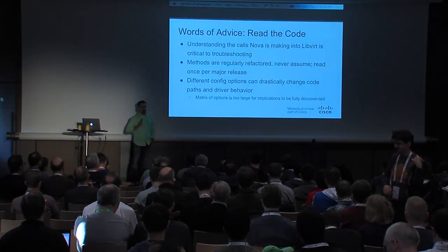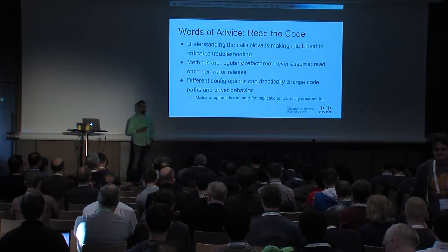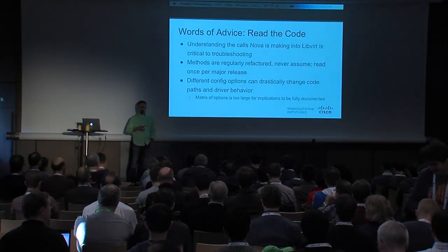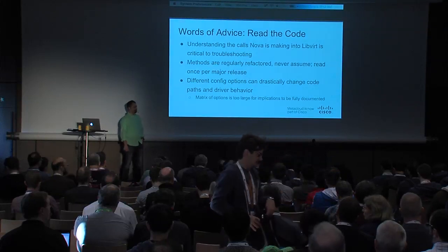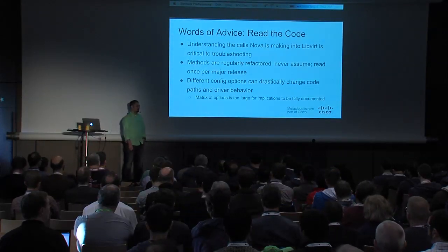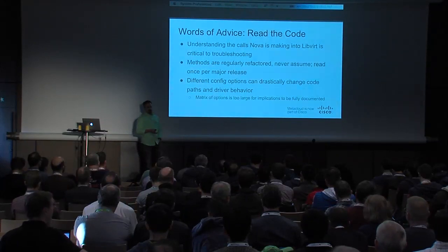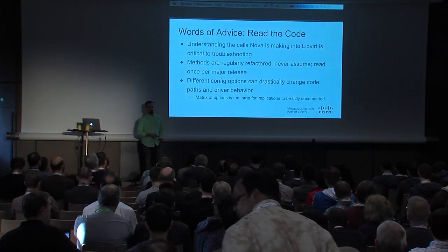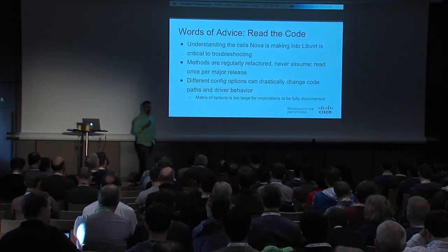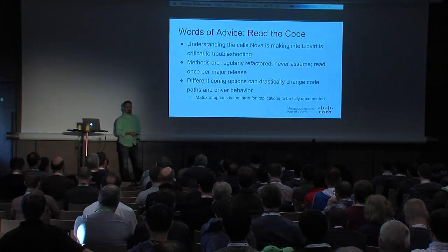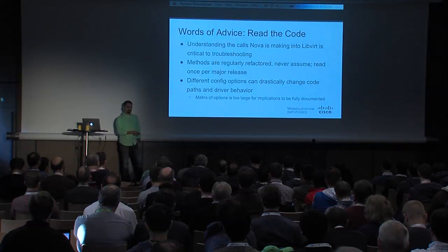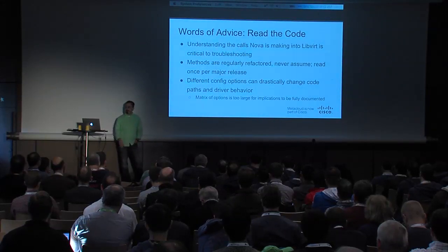A change in configuration options can dramatically alter the code paths and flow through the LibVirt driver. So prior to enabling or disabling a feature, or changing one of the various configuration options, make sure you're reading the code. The methods and operations are also pretty frequently refactored — for example, how resizes work has already changed in the Juno cycle, becoming a lot more efficient. Sometimes it's noted in the release notes, but really you need to go through and look at the code.